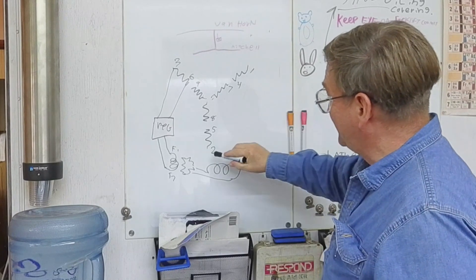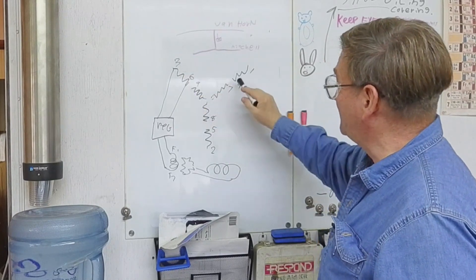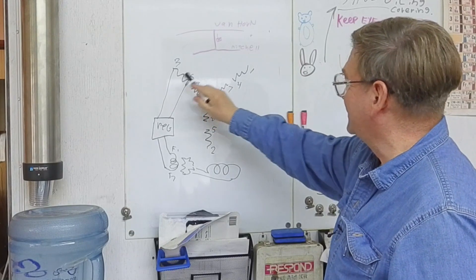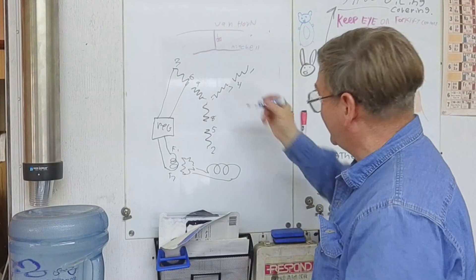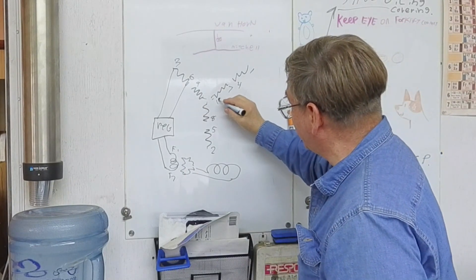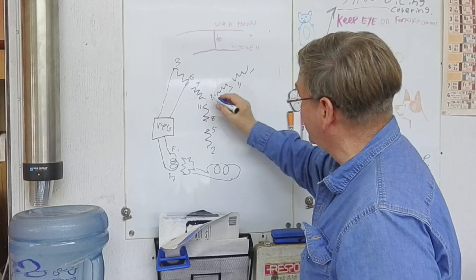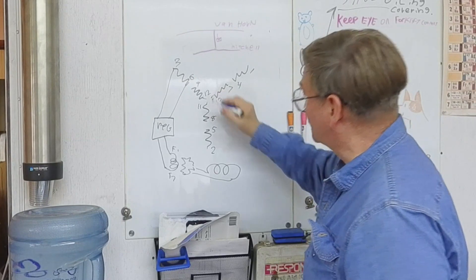You can number 1, 2, 3, drop down, 4, 5, 6, drop down to the next layer, 7, 8, 9. Then you drop down and this would be 10. This would be 11. And this one here would be 12.